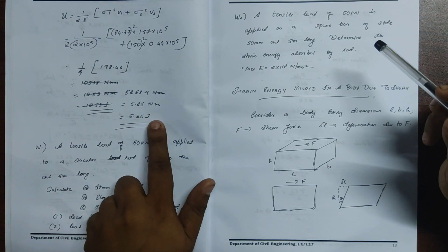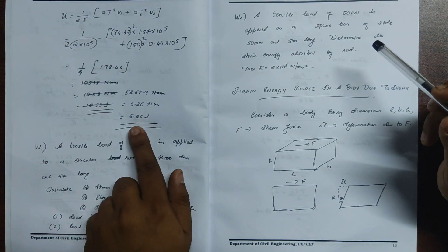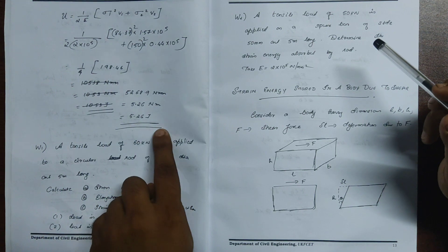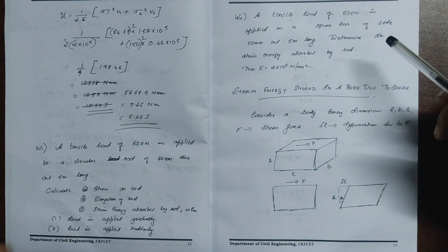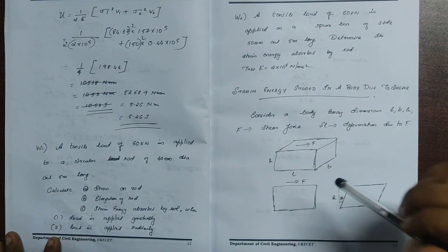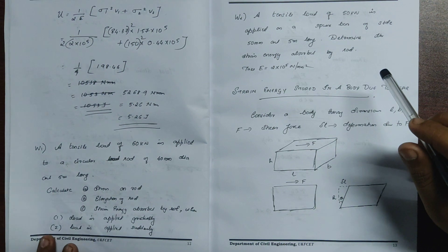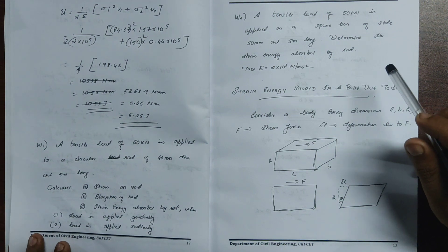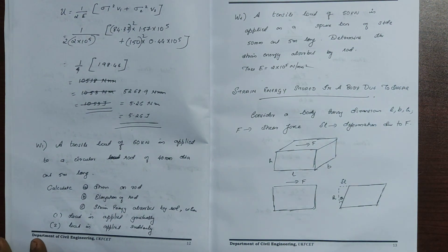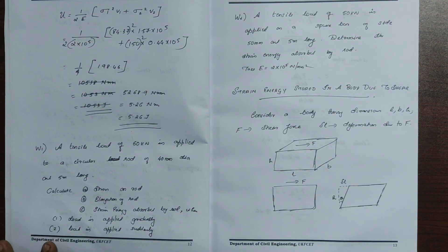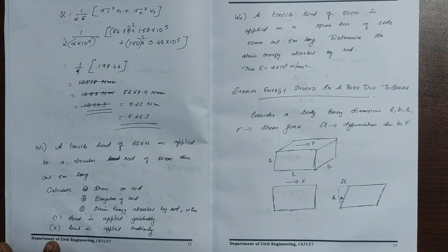The strain energy is 5.26 Nm, and since 1 Nm equals 1 Joule, the total strain energy stored in the bar is 5.26 Joules. Two material sections are used to calculate the first and second elements of the strain energy.